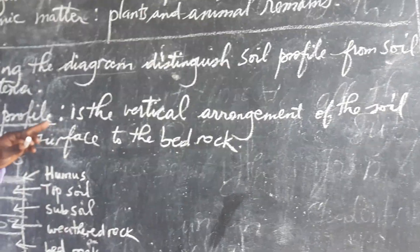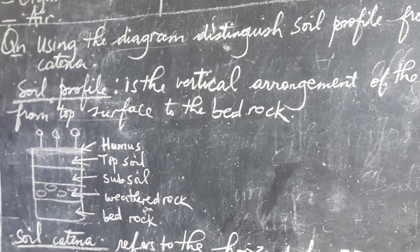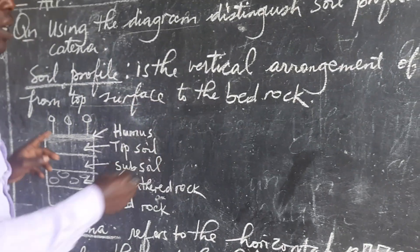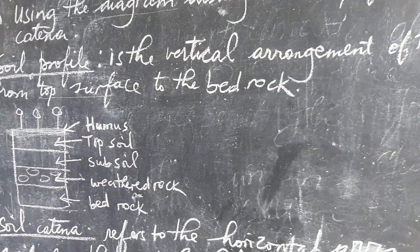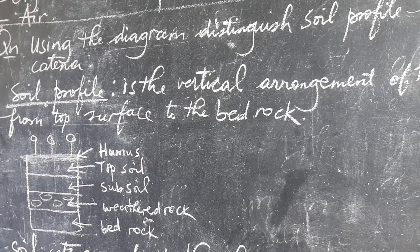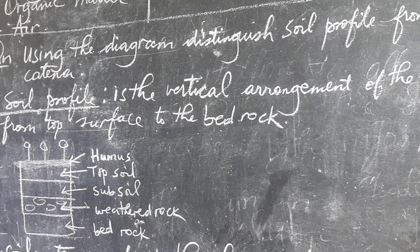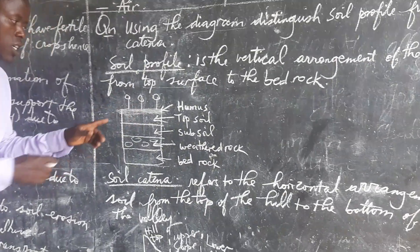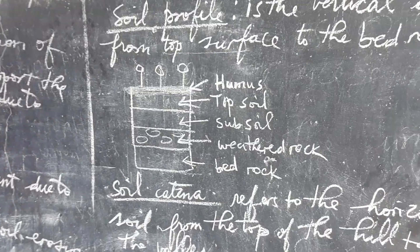When we talk about soil profile, it's the vertical arrangement of soil from the top surface to the bedrock. So meaning that the way soils are arranged vertically from the top surface to the bedrock, they make a soil profile. And we are going to see by using a diagram how soil profile looks like.